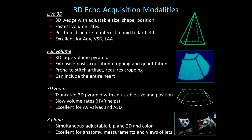Live 3D imaging involves a 3D wedge with adjustable size, shape, and position. The user defines those settings and it's very important to optimize them. In general, it has the fastest volume rate. It's important to position the structure of interest in the mid to far field where the sector is the largest. Live 3D works very well for the aortic valve, ventricular septal defects, and the left atrial appendage.